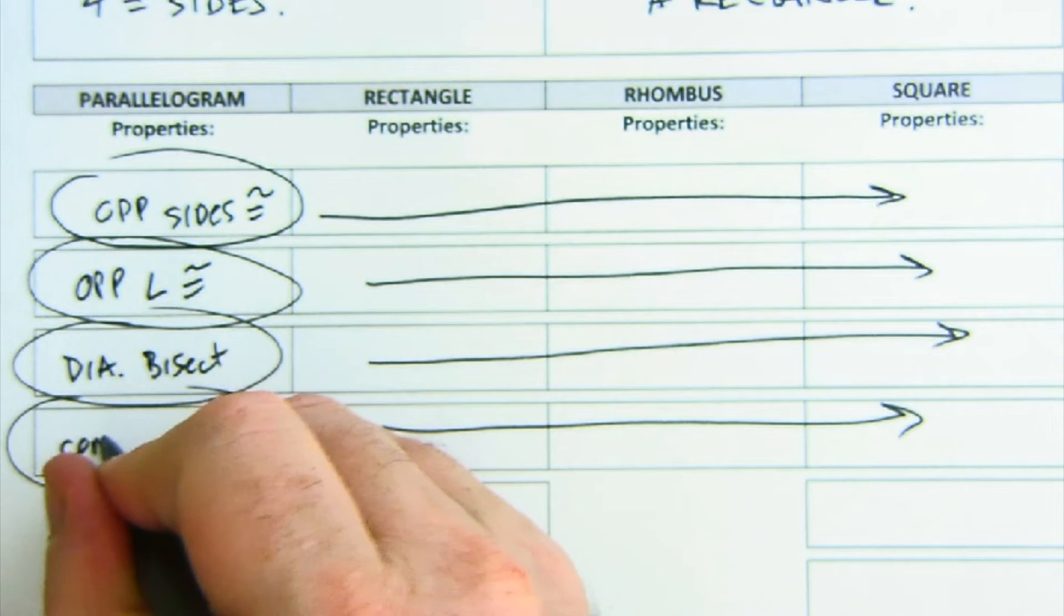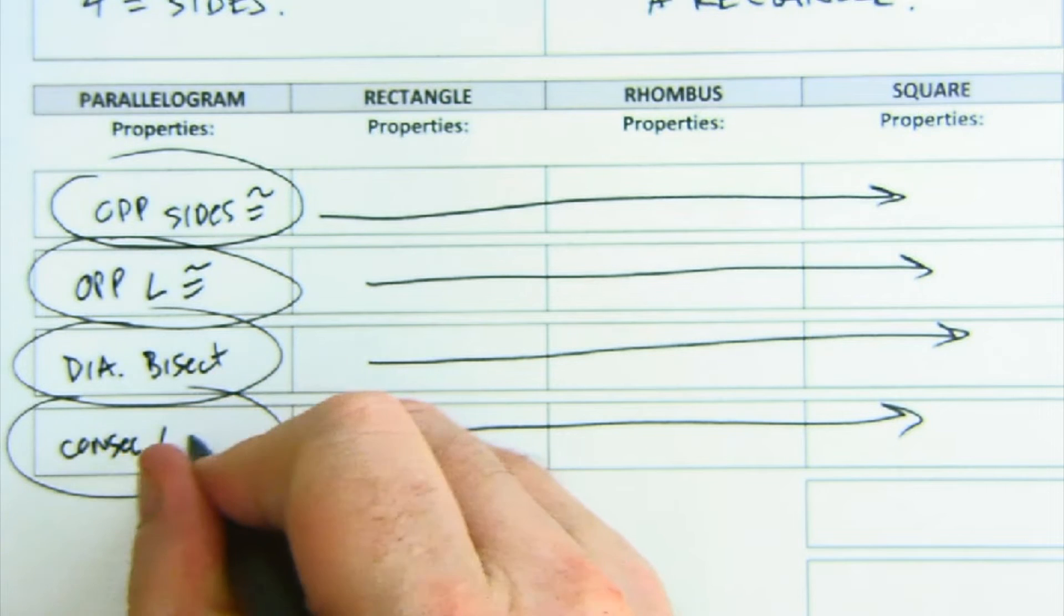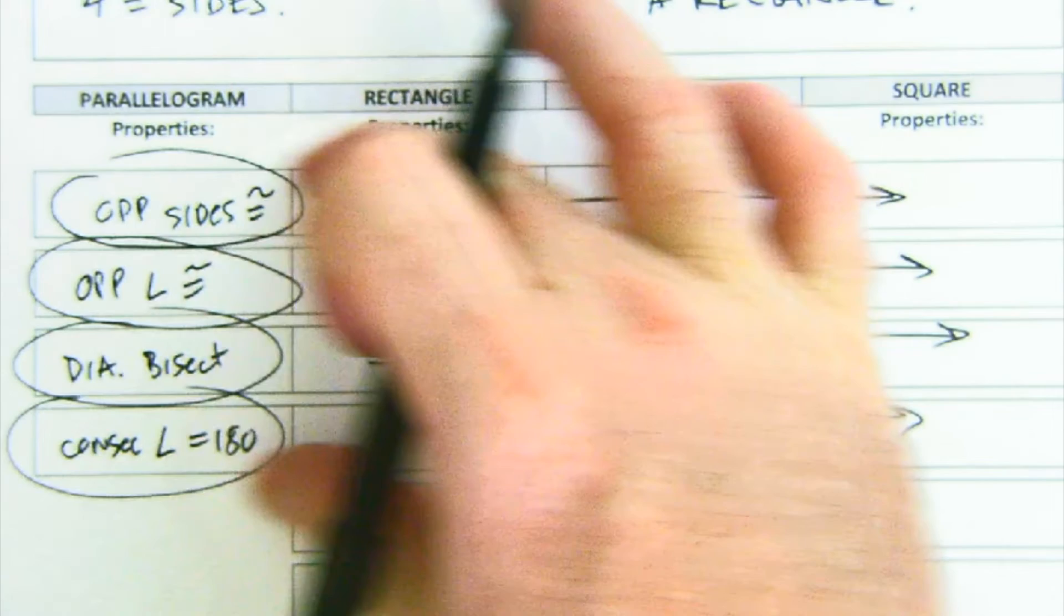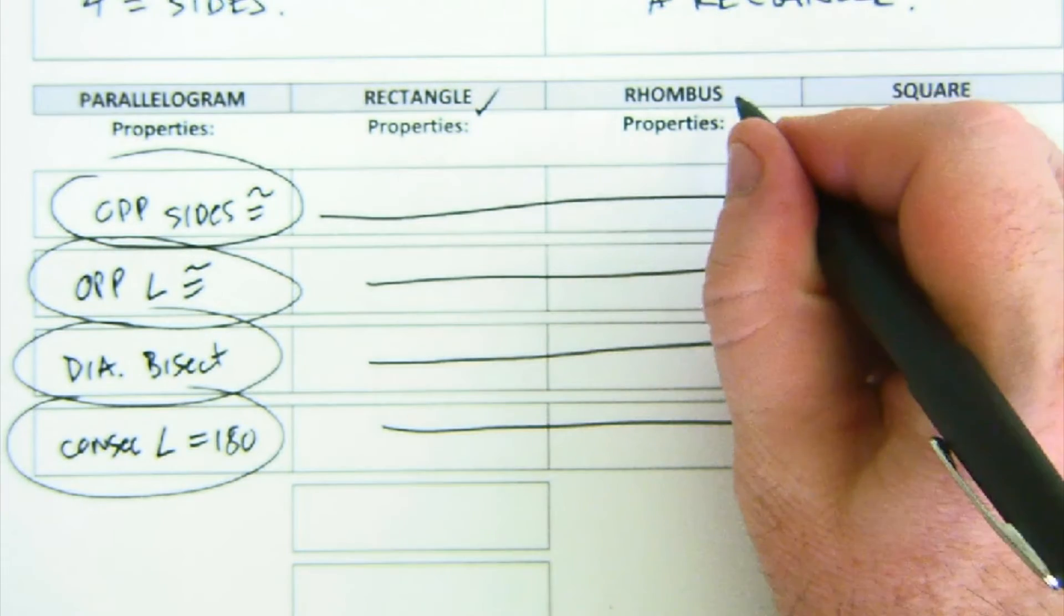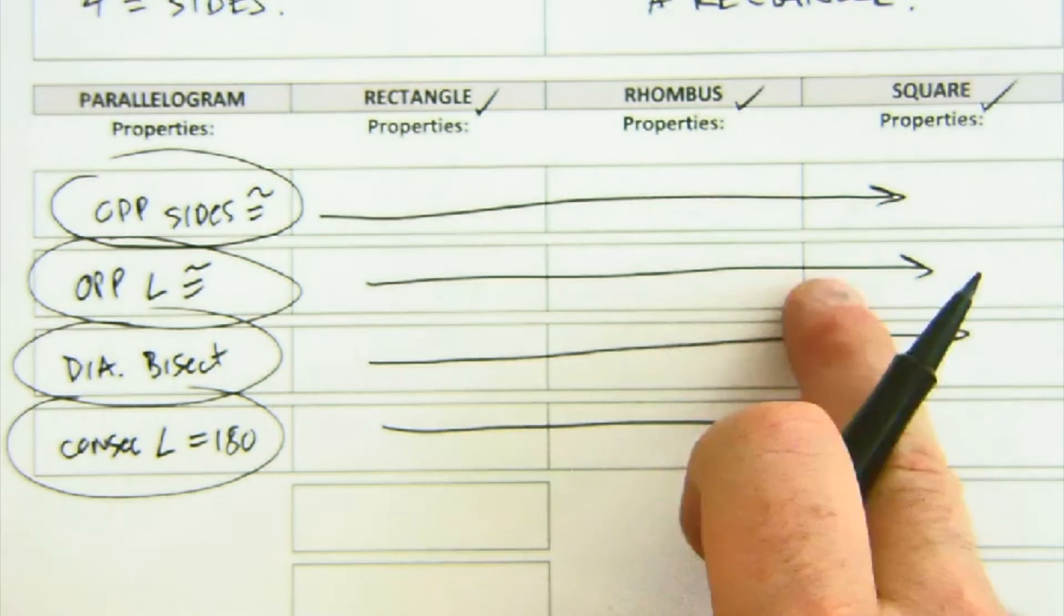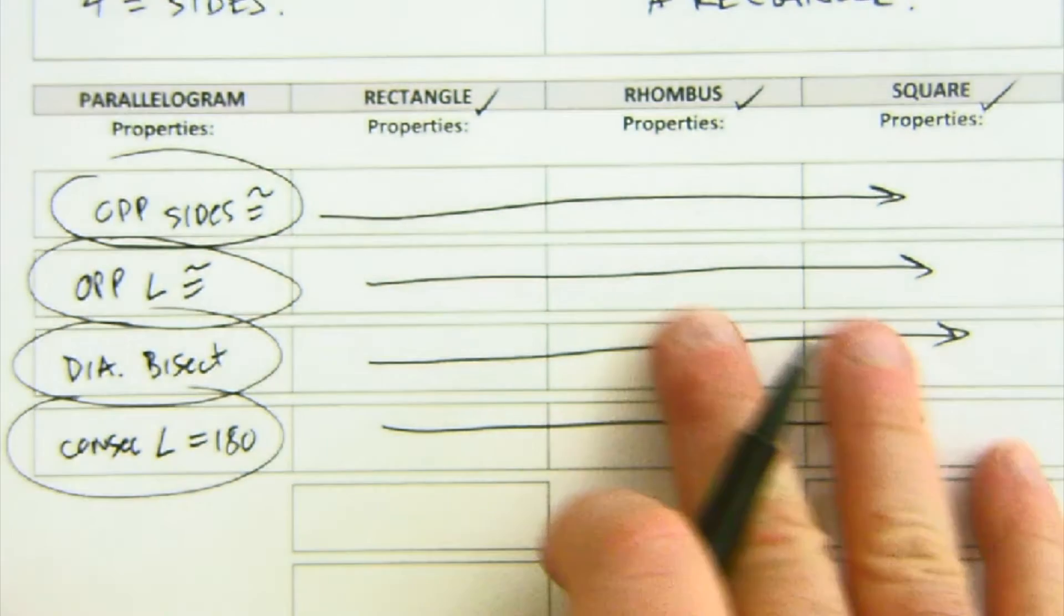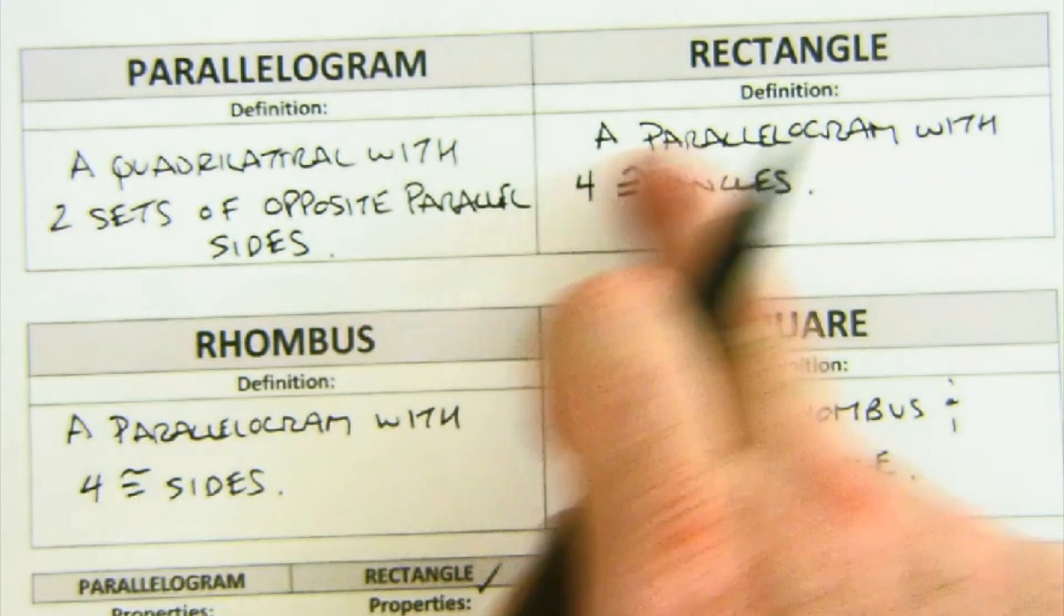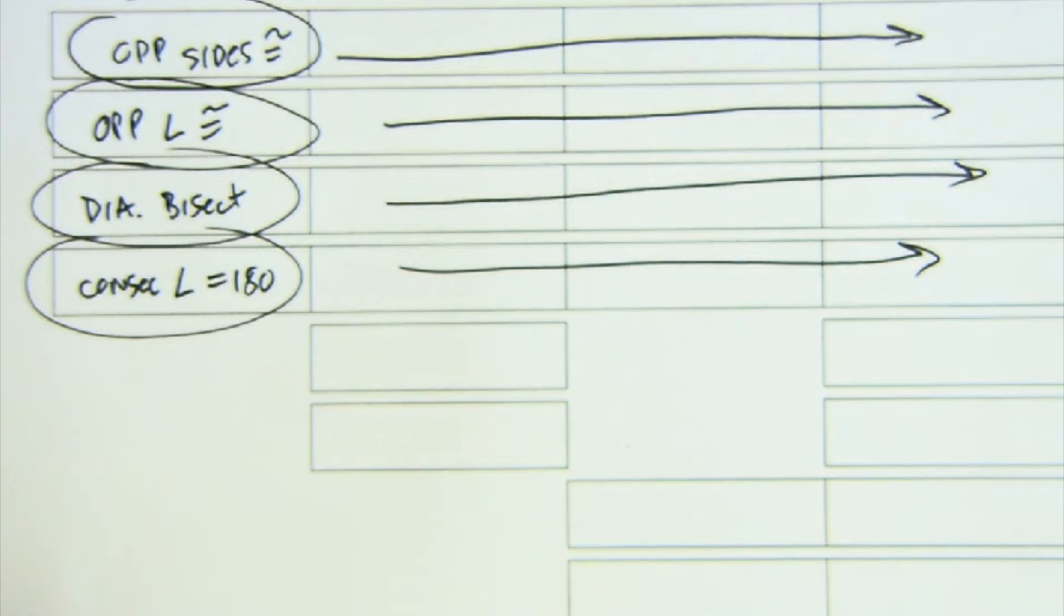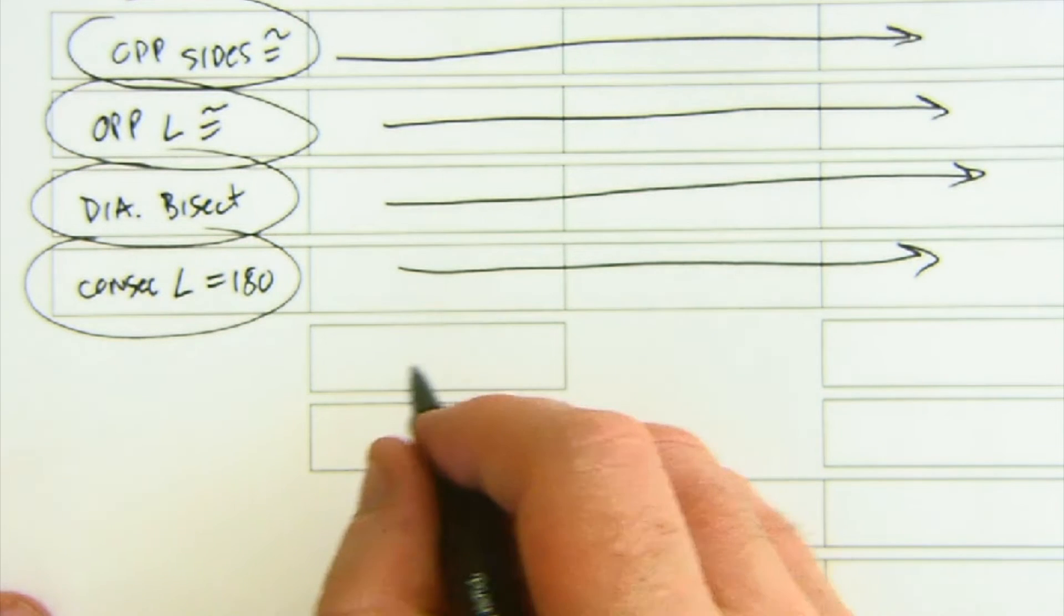Those four properties exist in the rectangle, the rhombus, and square because they are types of parallelograms—specific types. Then we start to see new properties arrive and they're usually about the diagonals. Actually, the new properties are about the diagonals.